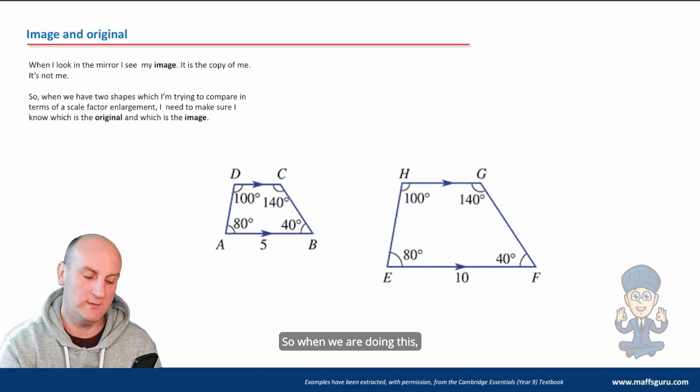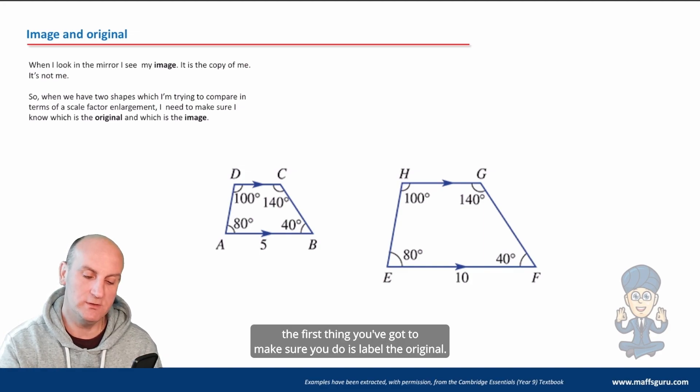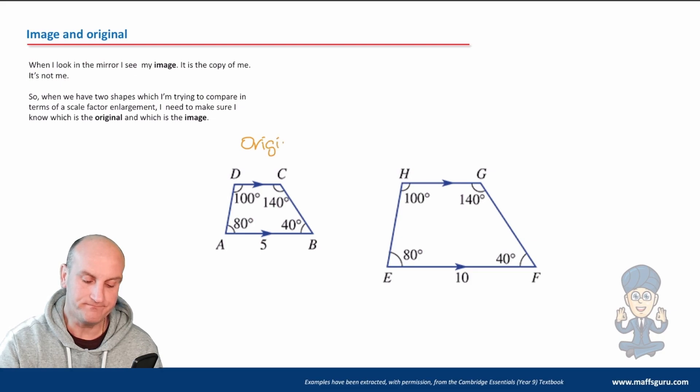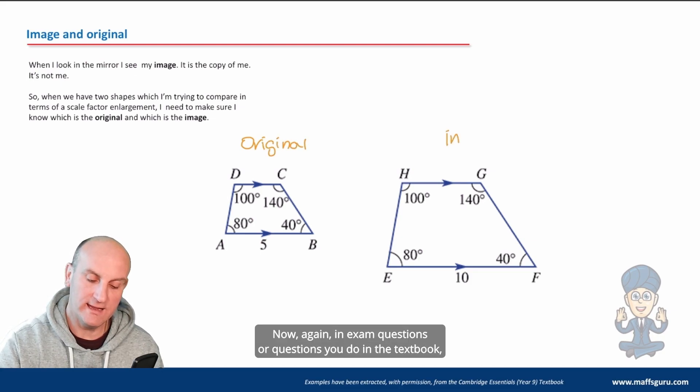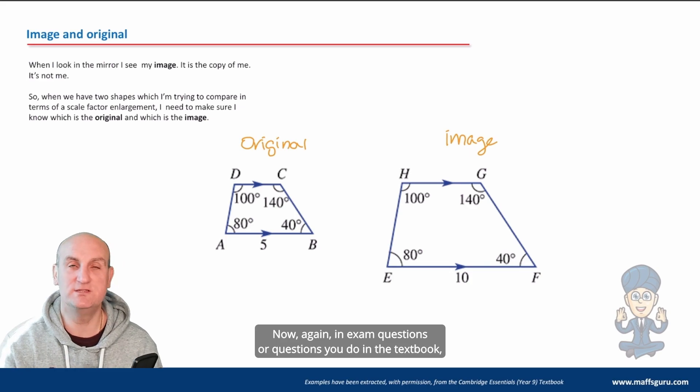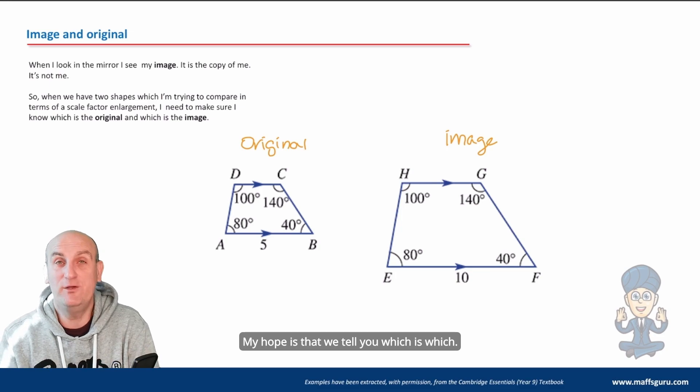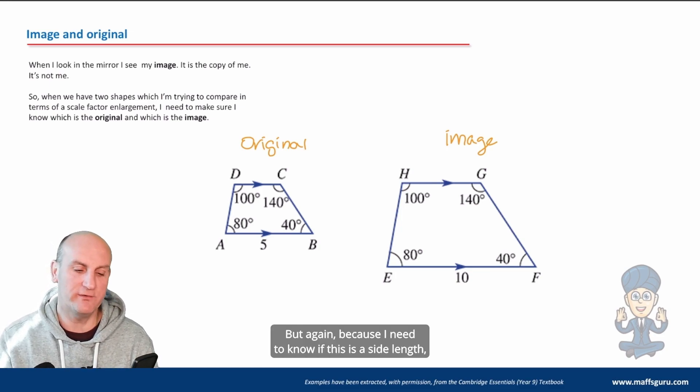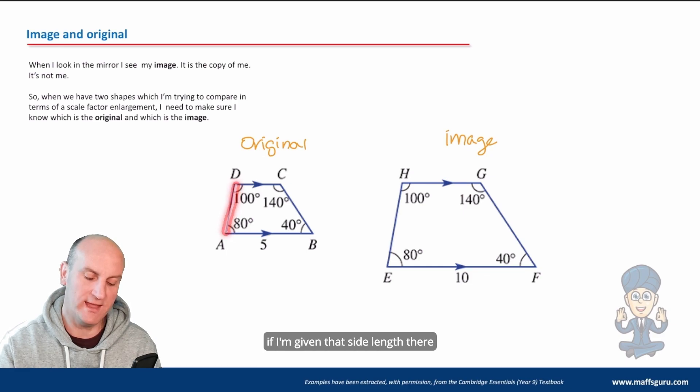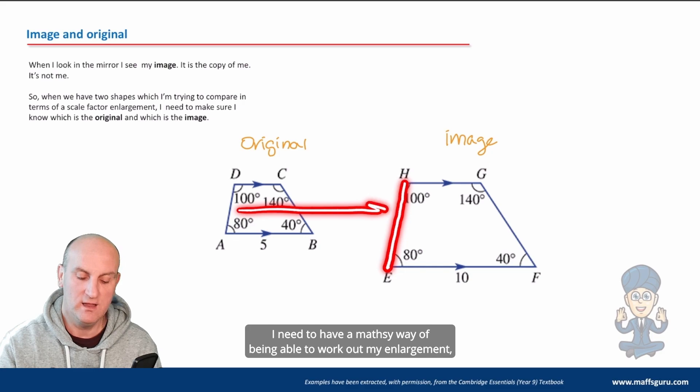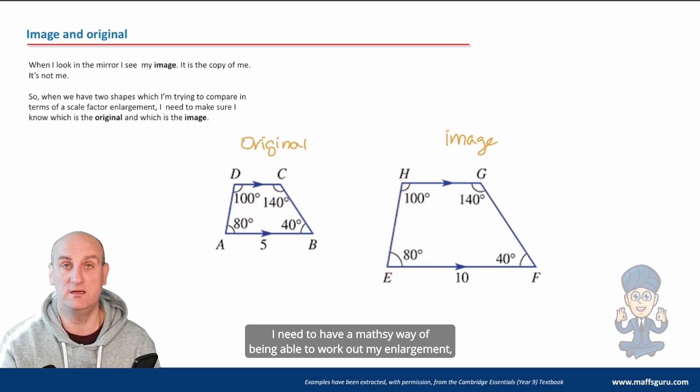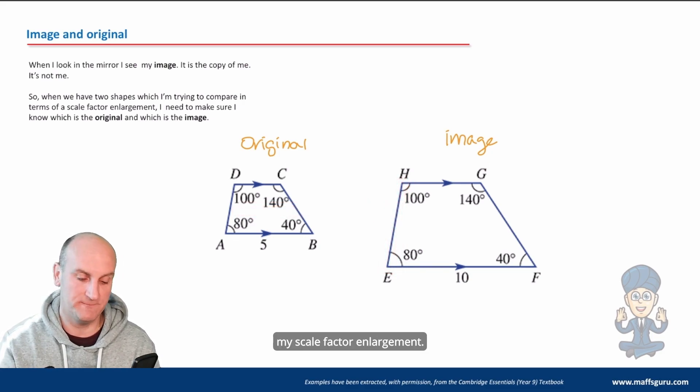I am seeing an image. When we are doing this, the first thing you've got to make sure you do is label the original and the image. In exam questions or questions you do in the textbook, it should be fairly clear which is which. My hope is that we tell you which is which, but I need to know if I'm given that side length and I'm given that side length, I need to have a mathsy way of being able to work out my enlargement, my scale factor enlargement.